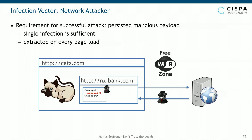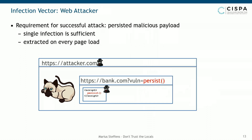The second infection vector we considered is the web attacker. In our case, the web attacker tries to make use of another reflected XSS vulnerability, gaining code execution in that specific origin. If they have code execution in the HTTPS origin, they can also tamper with the local storage of the HTTPS origin, as well as setting cookies as before.